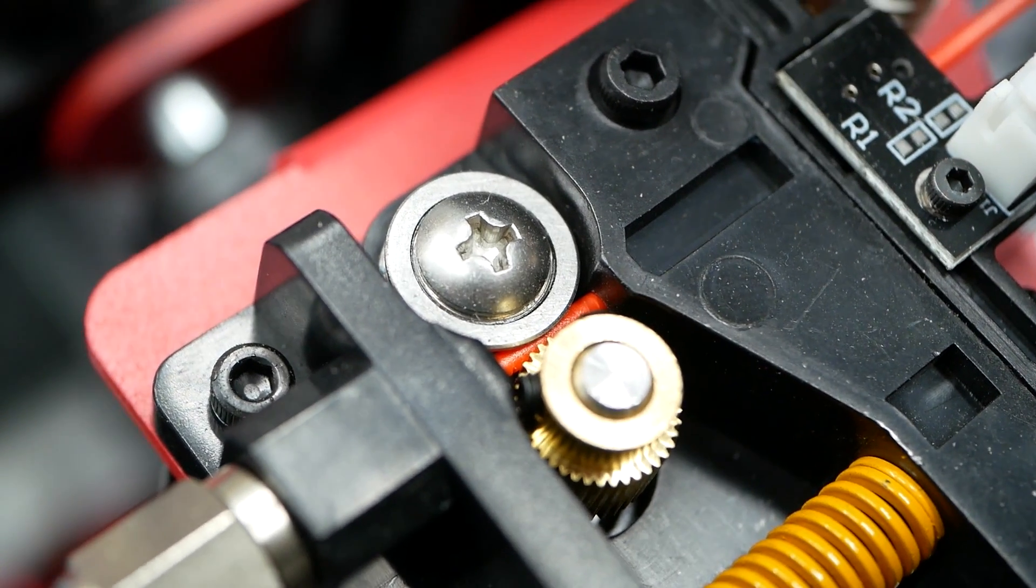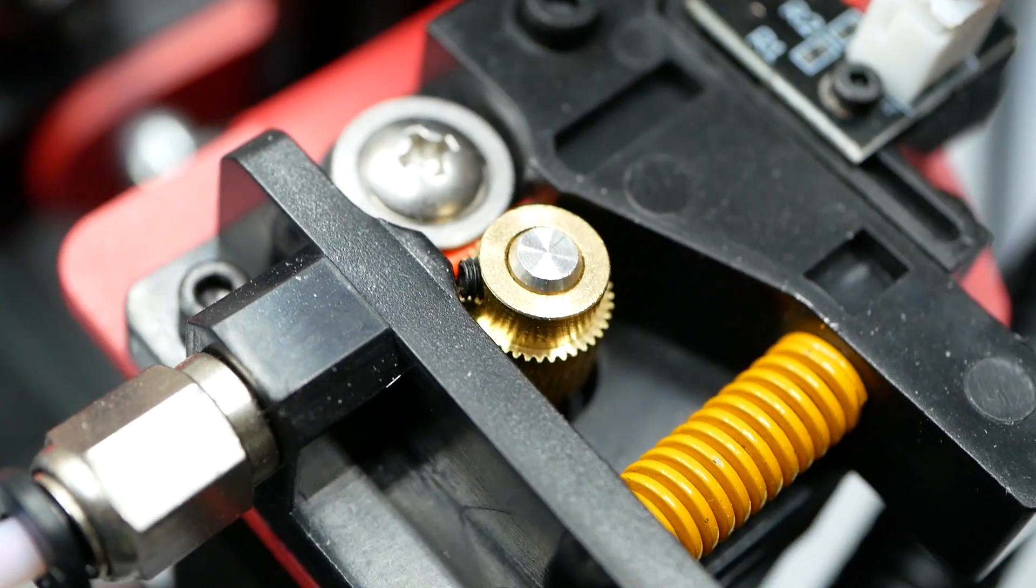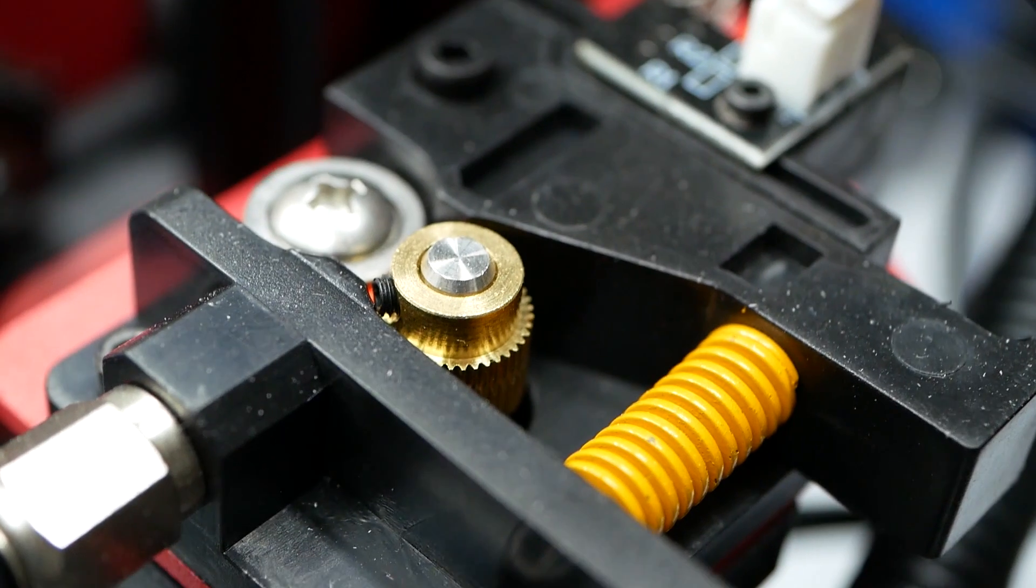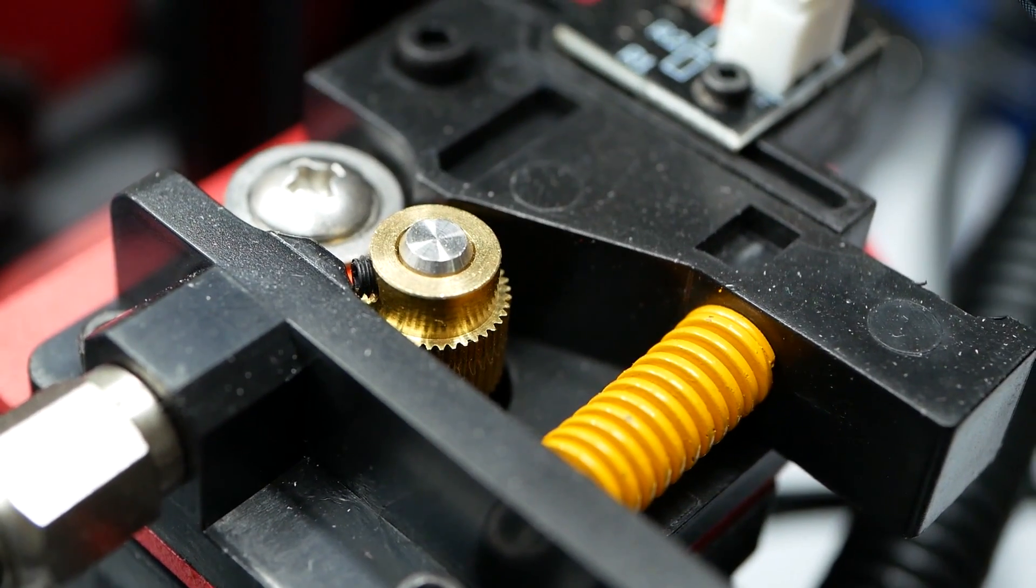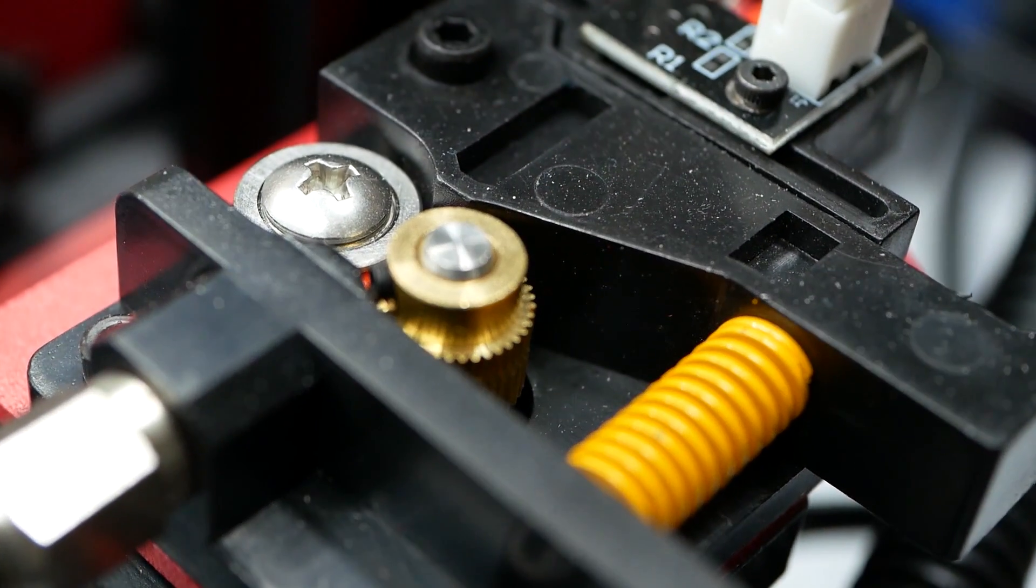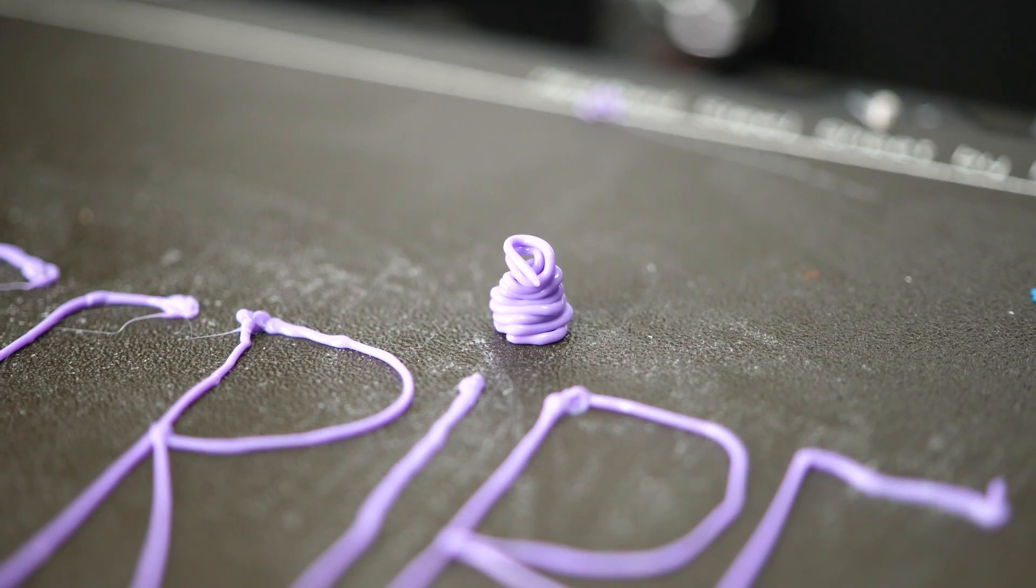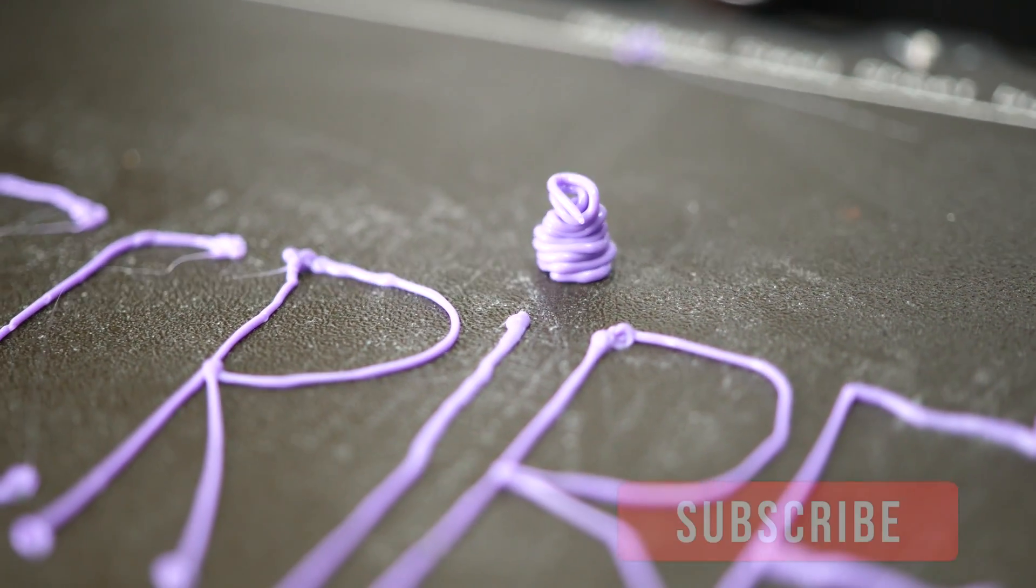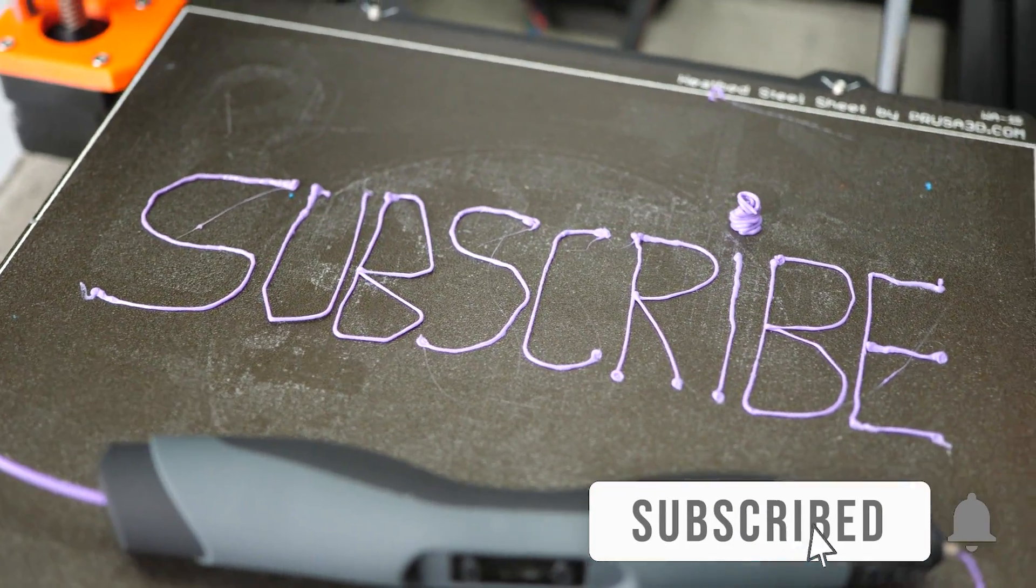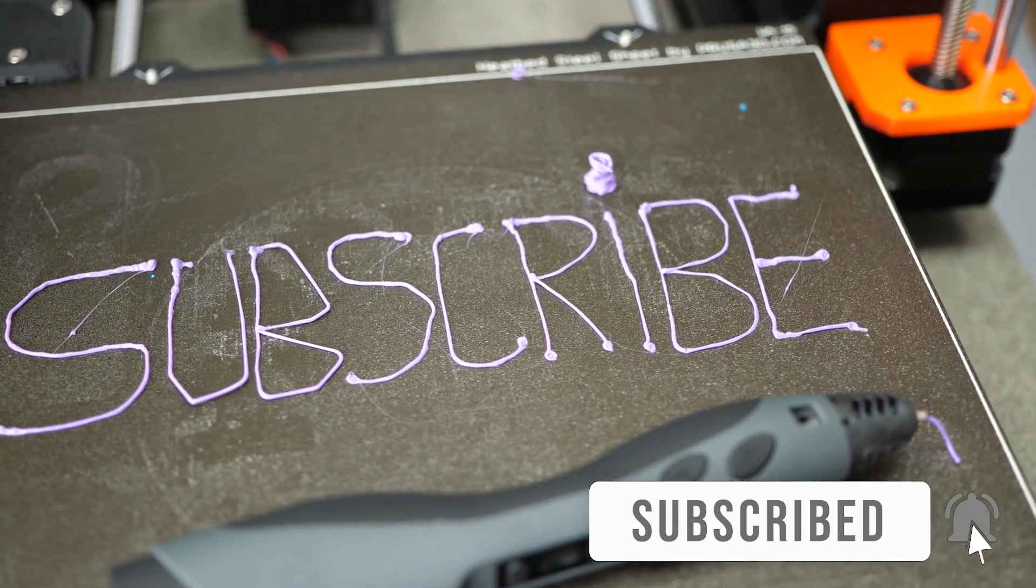Please note that especially with cheap single gear extruders the slippage might be way higher since they only drive the material from one side and often only use a knurled gear. And just on a side note, if you like such investigations leave a like, make sure to subscribe to the channel and select the notification bell.